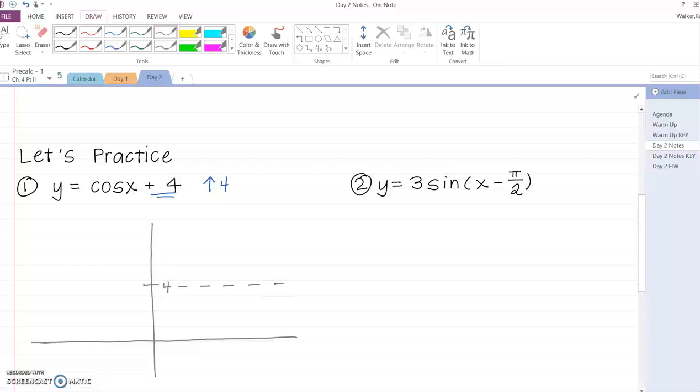So I just want to leave some room for that. Here's my midline at four. Now I always draw a dotted line in there so that you know exactly what you're going to keep coming back to once you start graphing. Now there's nothing being multiplied out in front. So my amplitude is just one.